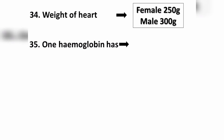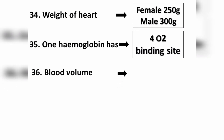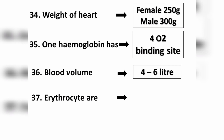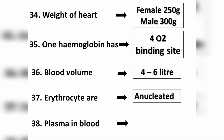Question number thirty-five: hemoglobin has four oxygen-binding sites. Question number thirty-six: the total blood volume in a human adult is four to six liters. Question number thirty-seven: erythrocytes (red blood cells) are enucleated. Question number thirty-eight: plasma makes up 55% of blood volume.